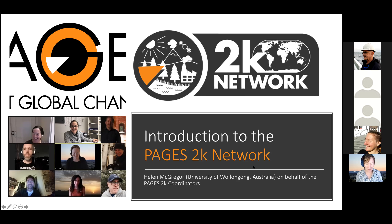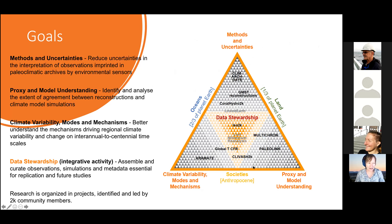I'm speaking today on behalf of the coordinator team. The overarching aim of the 2K network is to reduce uncertainties in interpretation of observations imprinted in paleoclimatic archives by environmental senses — so it's around paleoclimate. When we hit phase three, it became clear that there were lots of sub-projects around.